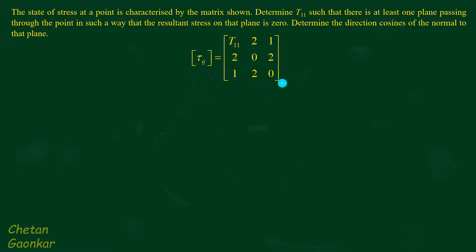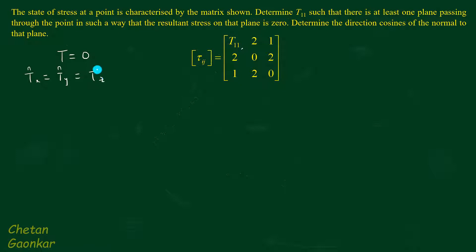We have an interesting problem here. The rectangular stress components are given to us but they are not complete — we need to find one component, sigma x, which is given as t11. We need to determine t11. One of the planes passing through this point has a resultant stress of zero on that plane. For the resultant stress to be zero, the traction vectors in x, y, and z directions must all be zero. We also need to determine the direction cosines of the normal to that plane.